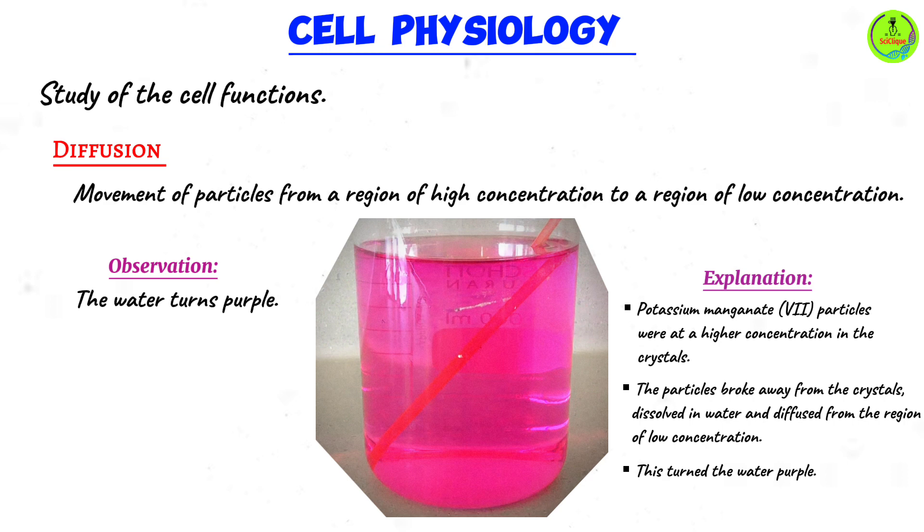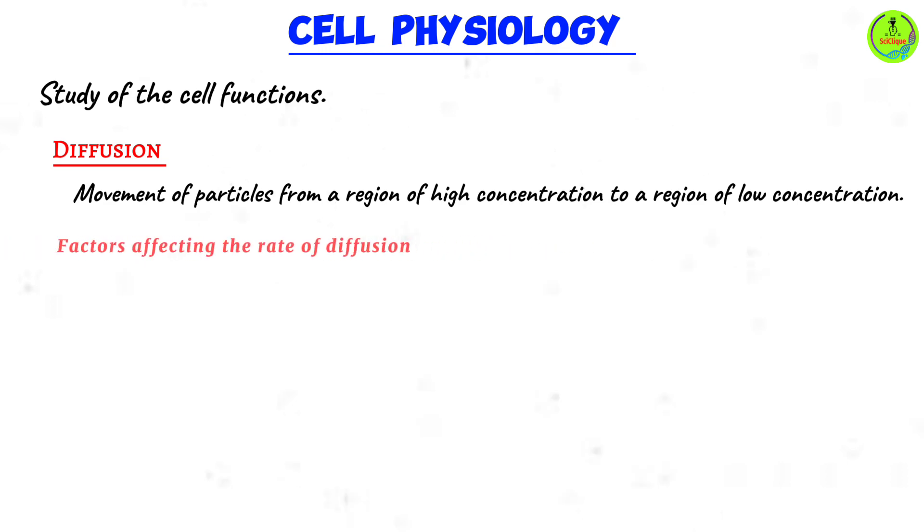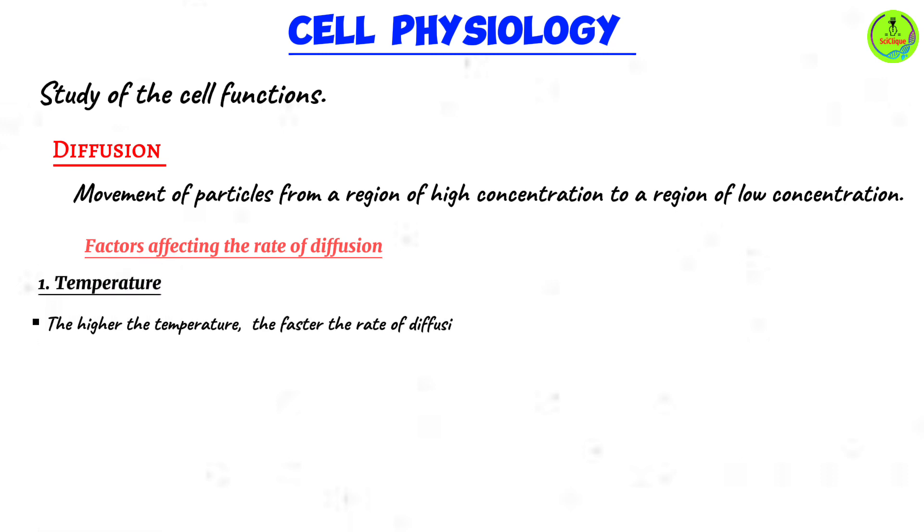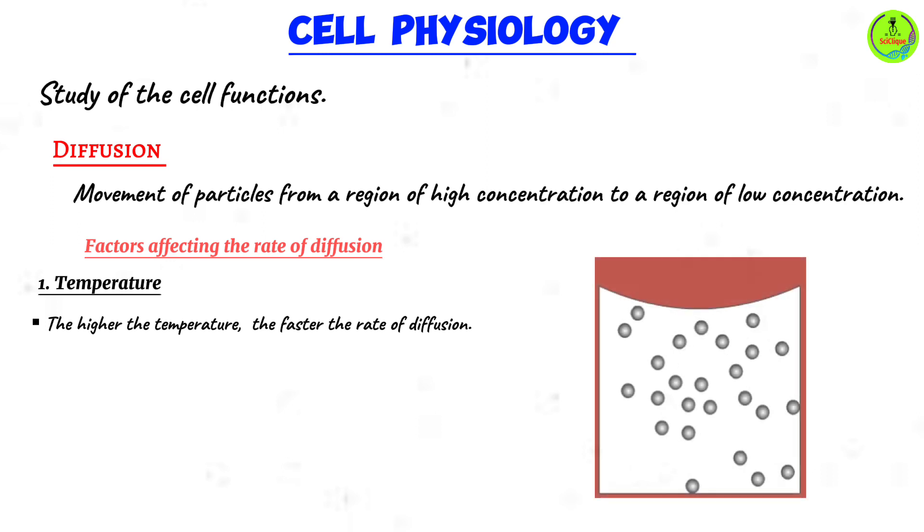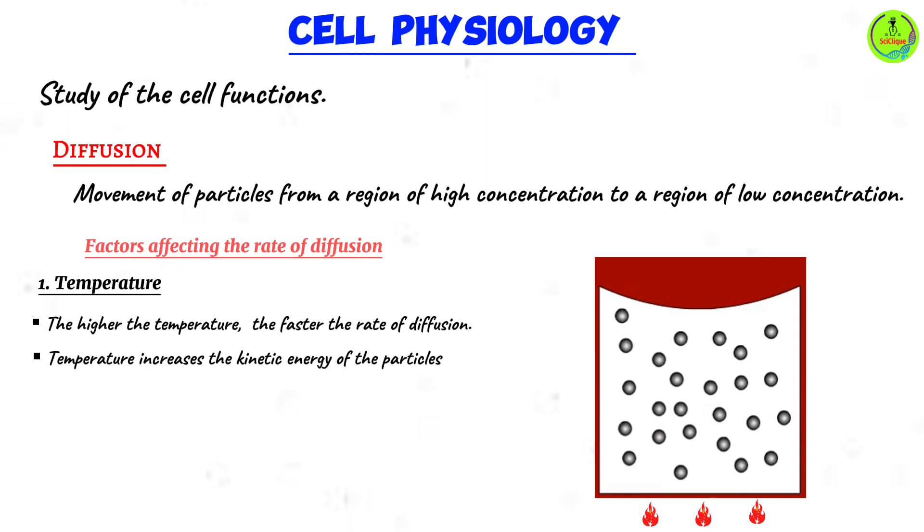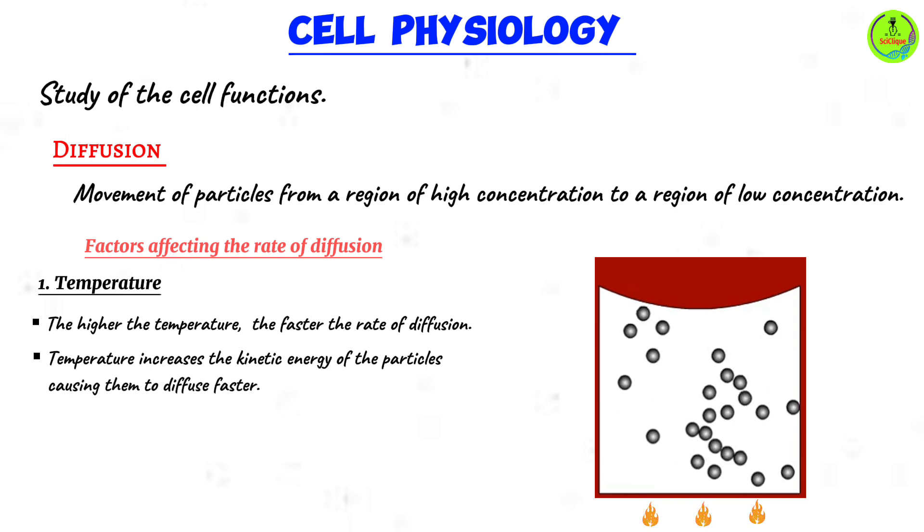Let's move on to factors that affect the rate of diffusion. Number one is temperature. The higher the temperature, the faster the rate of diffusion. What happens is that when you increase the temperature, you increase the kinetic energy of the particles. Kinetic energy is the energy that is responsible for movement.